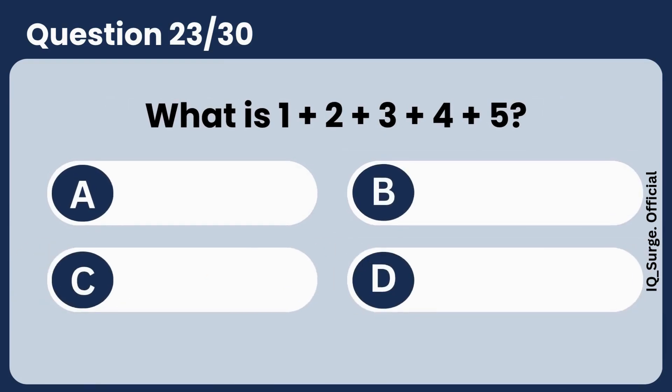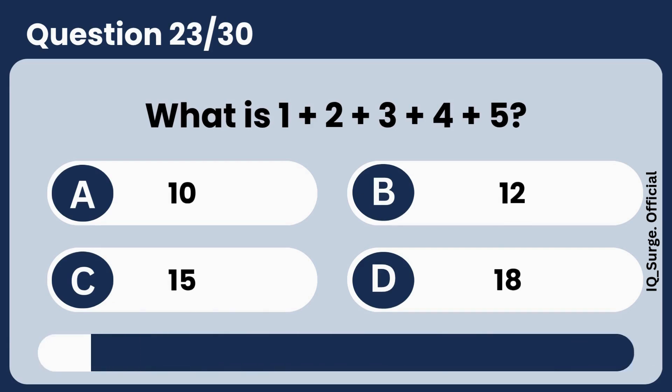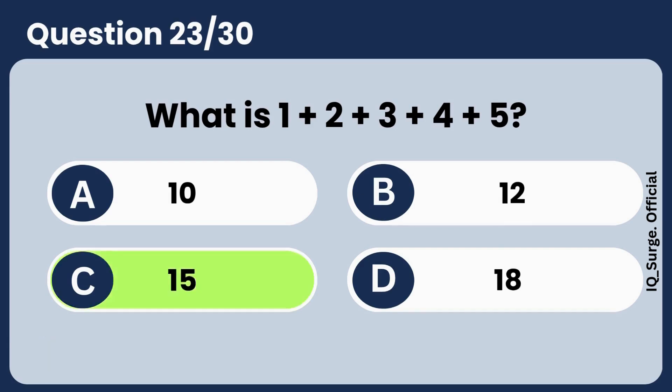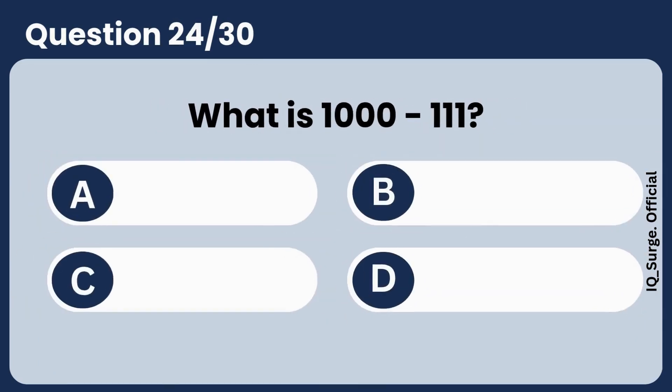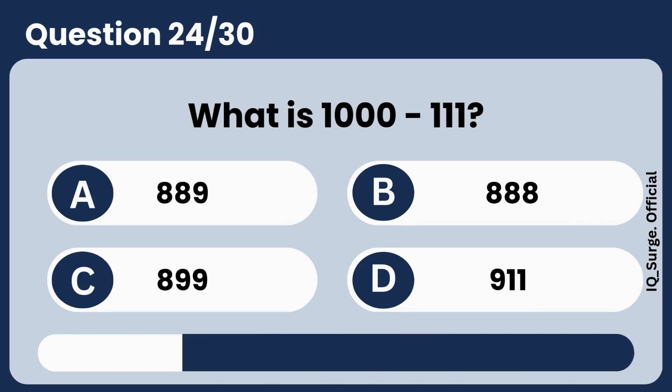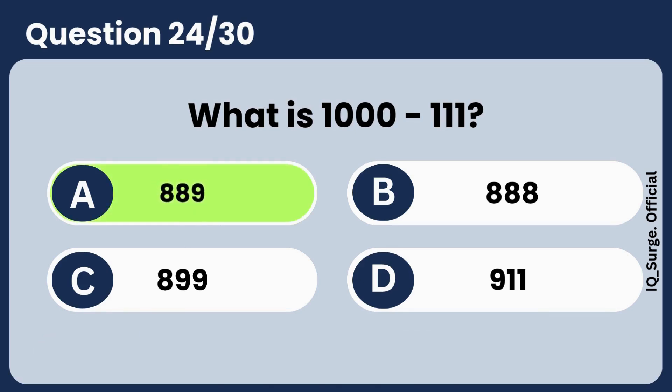What is 1 plus 2 plus 3 plus 4 plus 5? What is 1,000 minus 111? Answer A, 889.